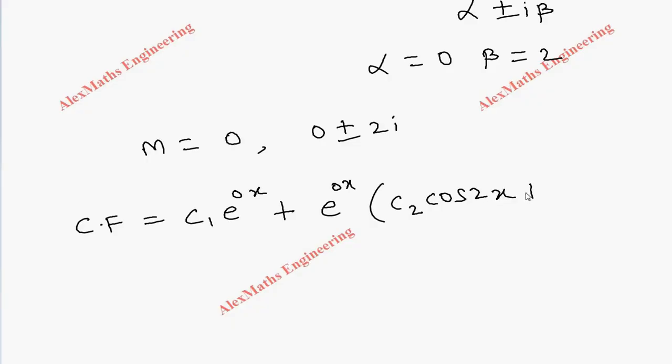So finally, by rearranging, e^(0x) is 1, so we have only constant c₁ + c₂cos(2x) + c₃sin(2x). Coming to the particular integral, on the right-hand side we have a term sin(2x).